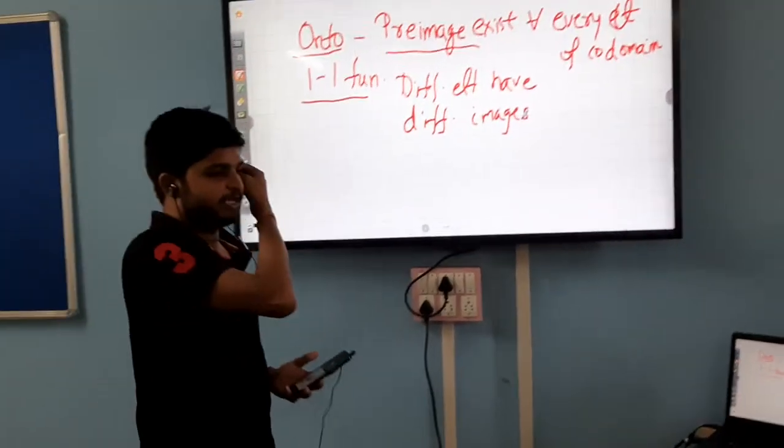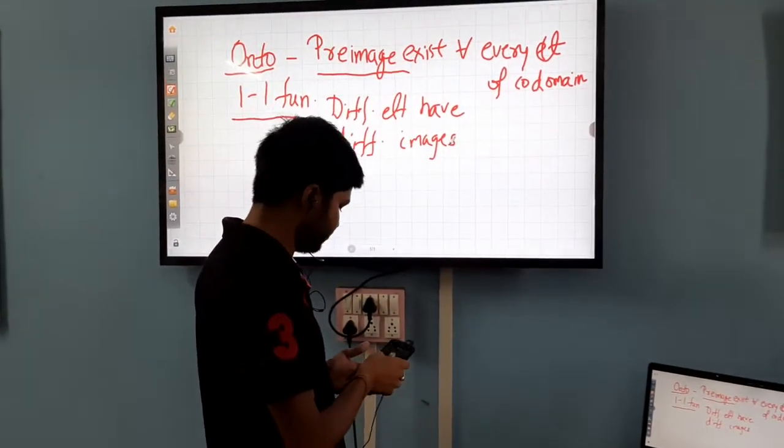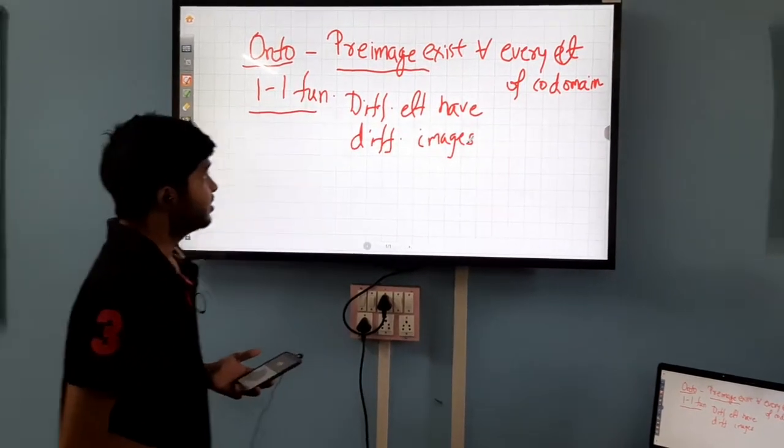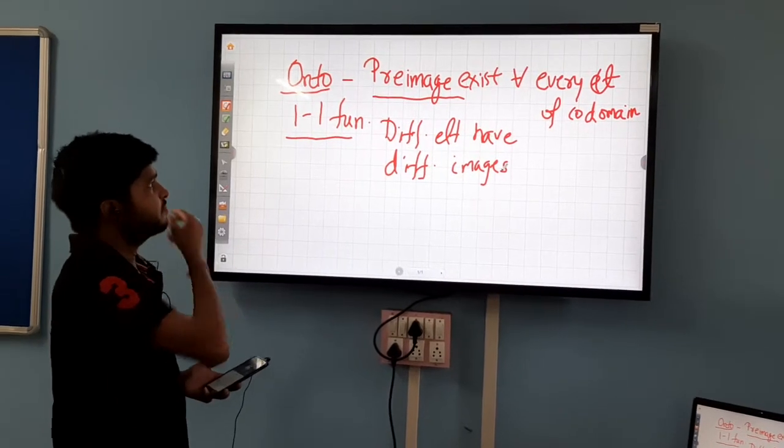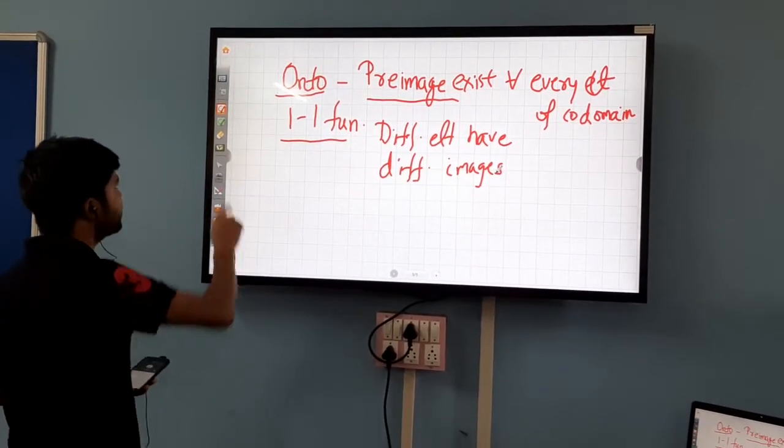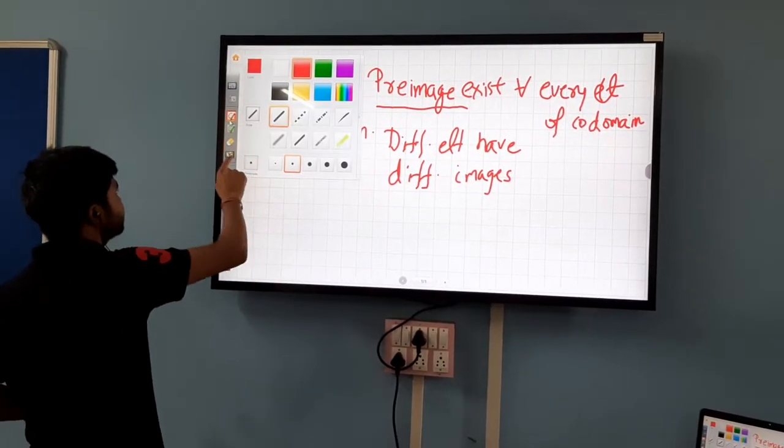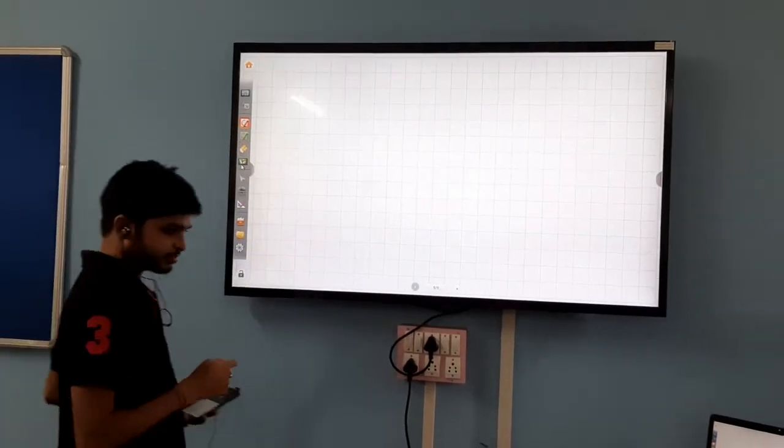And there is a preimage at least for every element of codomain, then the mapping is called onto. Now, let us get an example.